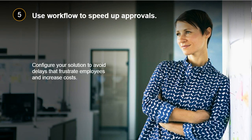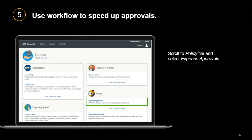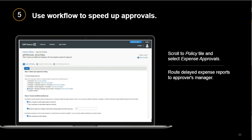Let's wrap up with another favorite topic: approvals — and more specifically, approval delays. You can configure your solution's workflow to speed up the process and ensure reports are getting approved promptly so employees aren't dealing with unnecessary delays, you can accurately accrue and manage budgets, and you can avoid late fees on corporate cards. From Expense Settings, go to Policy and select Expense Approvals. Be sure the 'Escalate to Approver's Manager' box is checked — when it is, if an approver does not approve a report within your set time frame, it will be escalated to their manager.